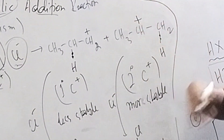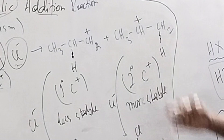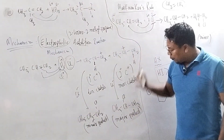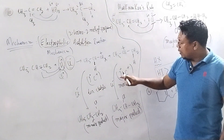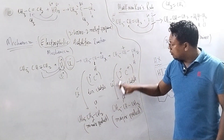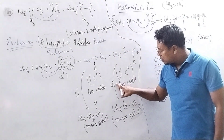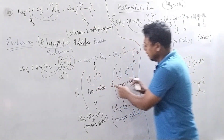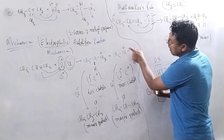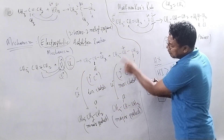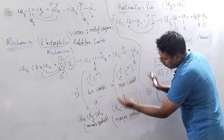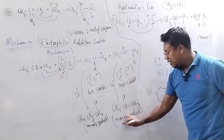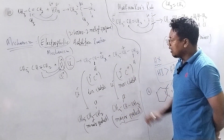A larger amount of the stable secondary carbocation intermediate is formed. The product formed by reacting this intermediate with the Cl⁻ ion will be our major product. This is all about Markovnikov's rule.